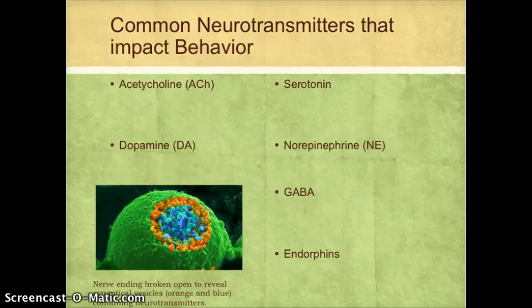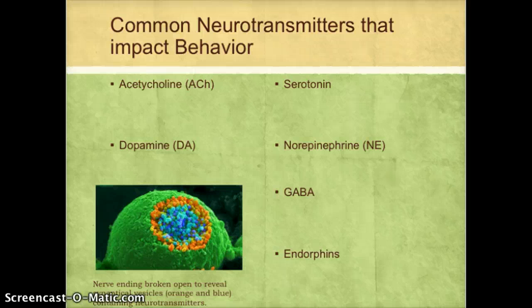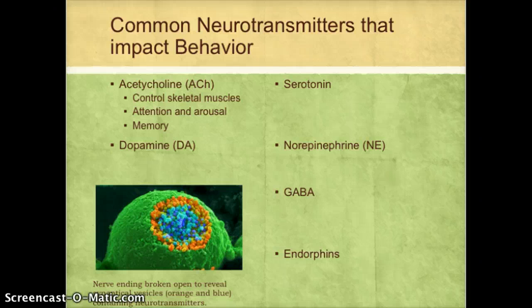There are over a hundred neurotransmitters, but in this class we'll focus on just six. The first is acetylcholine. Acetylcholine is the neurotransmitter responsible for controlling your skeletal muscles — so when I tell my arm to raise up or put down, I'm activating acetylcholine. It's also responsible for attention and arousal — whether I'm awake or sleepy, whether I can pay attention — and it also plays a role in memory.